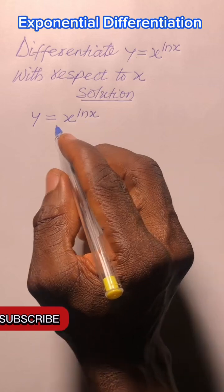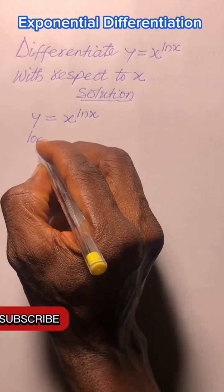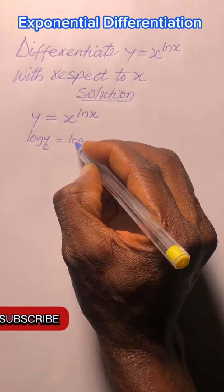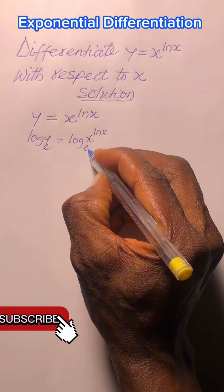In order to solve it, we are going to take the natural logarithm of both sides. We have log_e(y) = log_e(x^(ln x)).